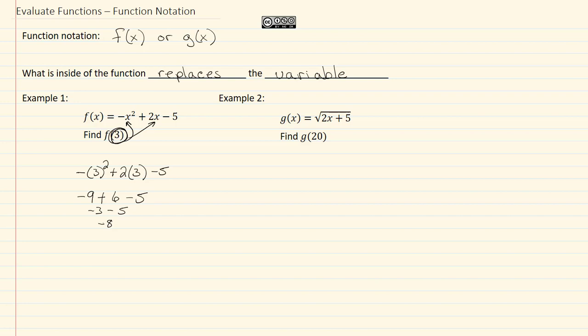Let's look at example two. Here we have g(x) = √(2x + 5) and it says find g(20). That means we're replacing our x with a 20 and that's inside our radical. So I have the square root of 2 times 20 plus 5. Simplifying that, I've got 2 times 20 which would be 40 plus 5 which gives me the square root of 45.